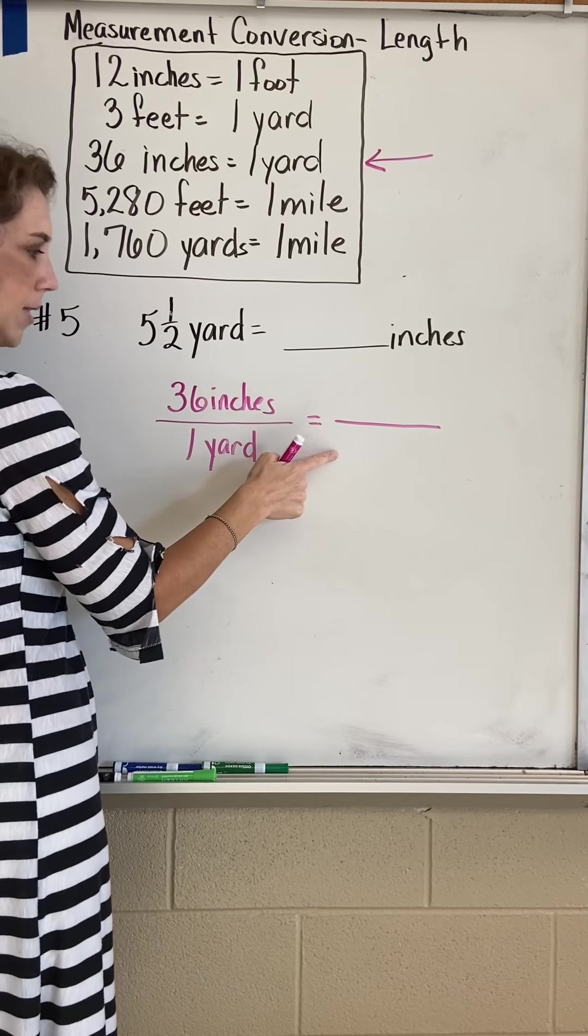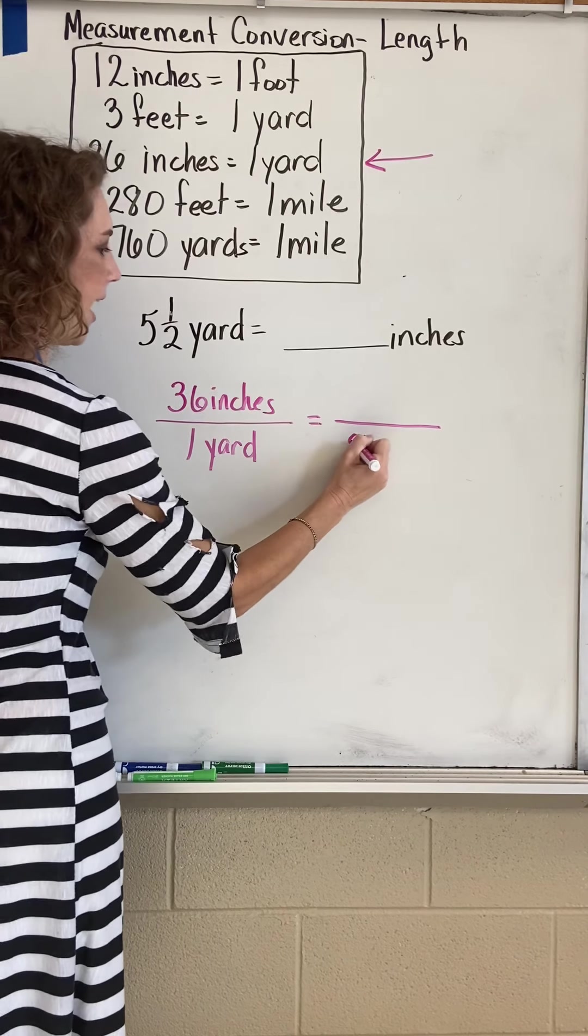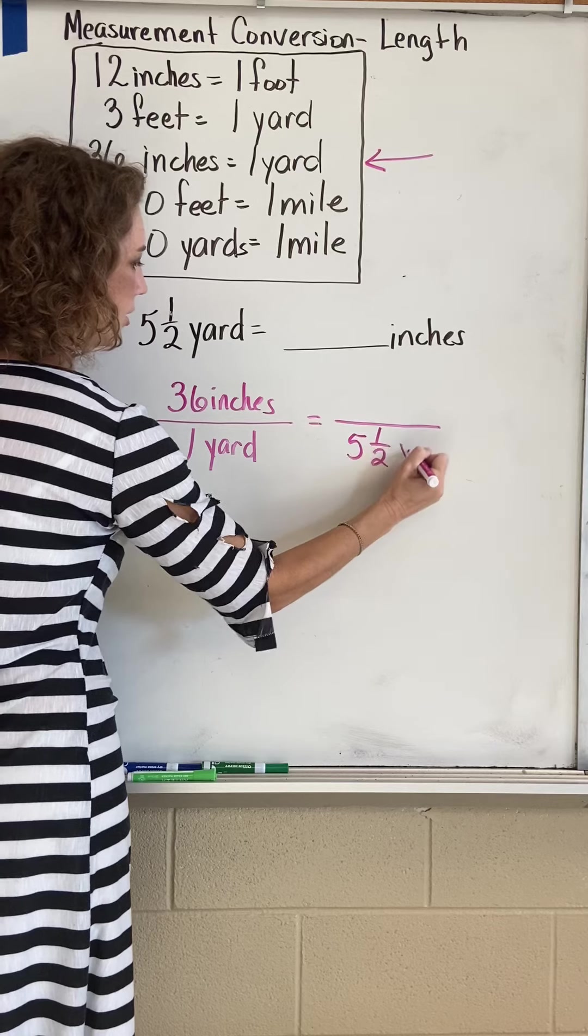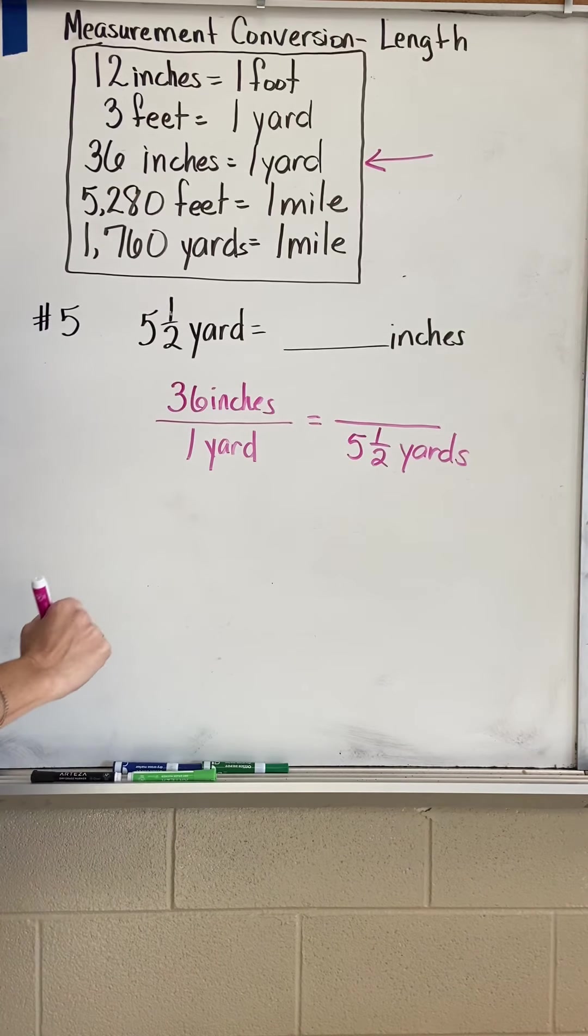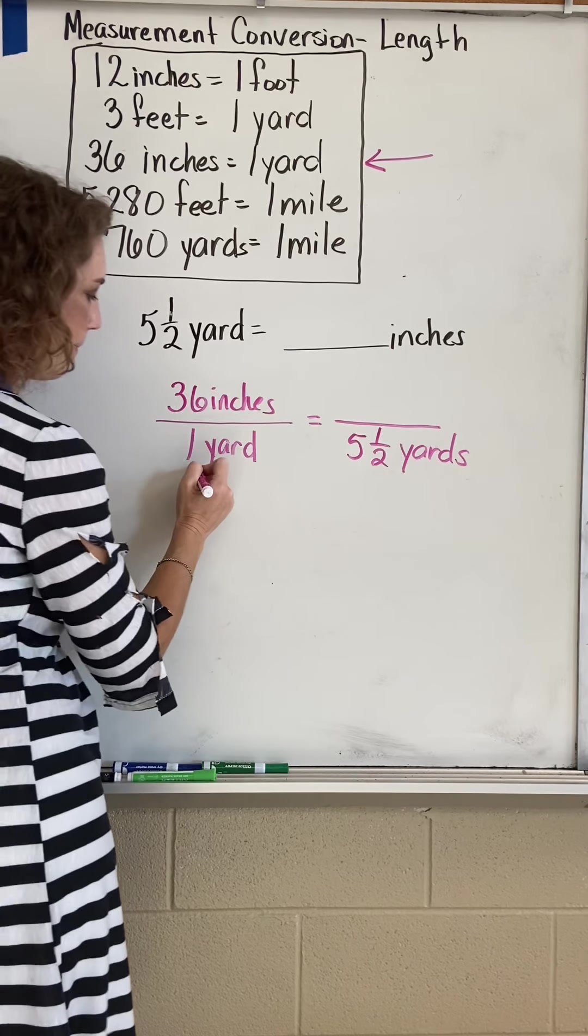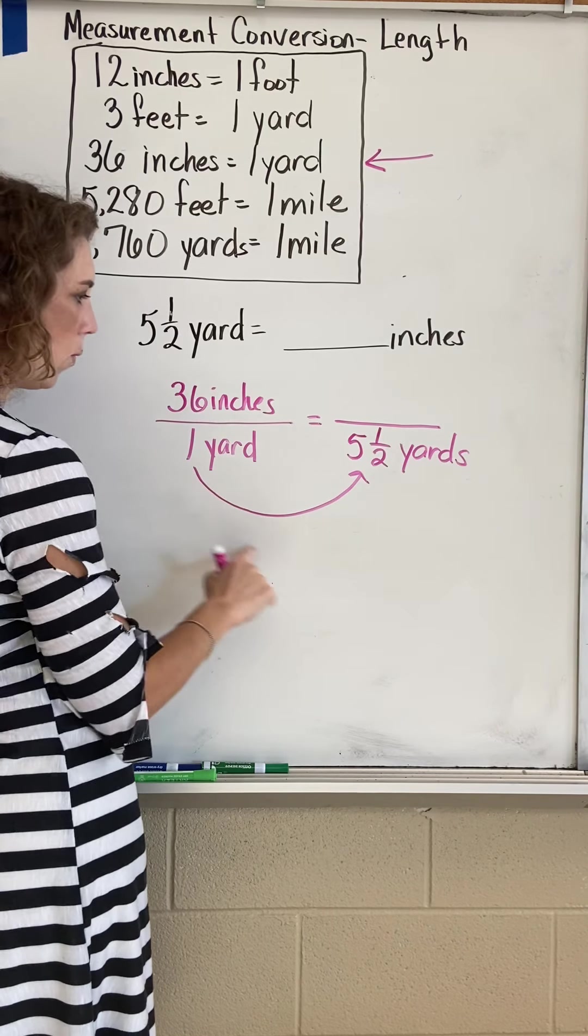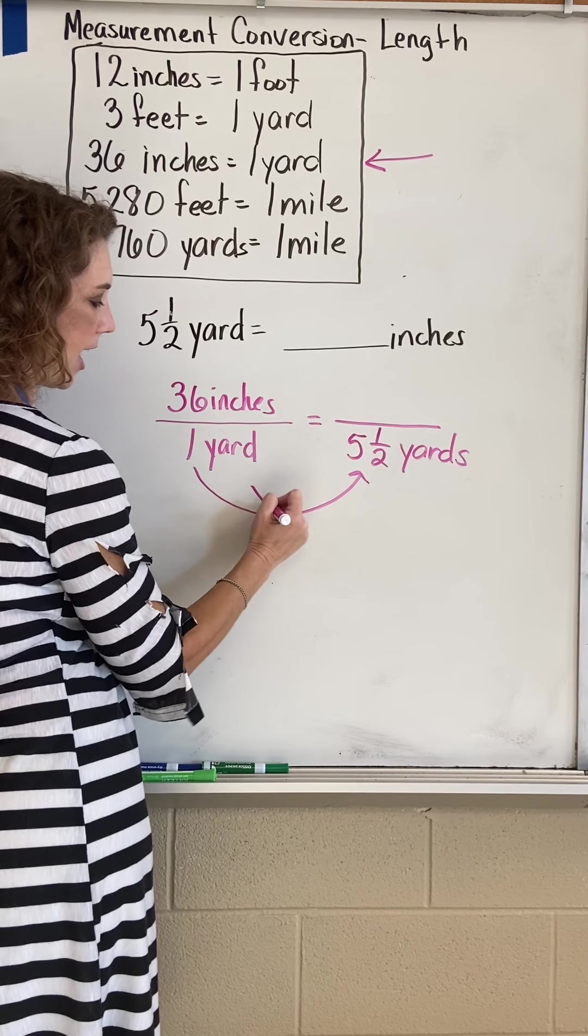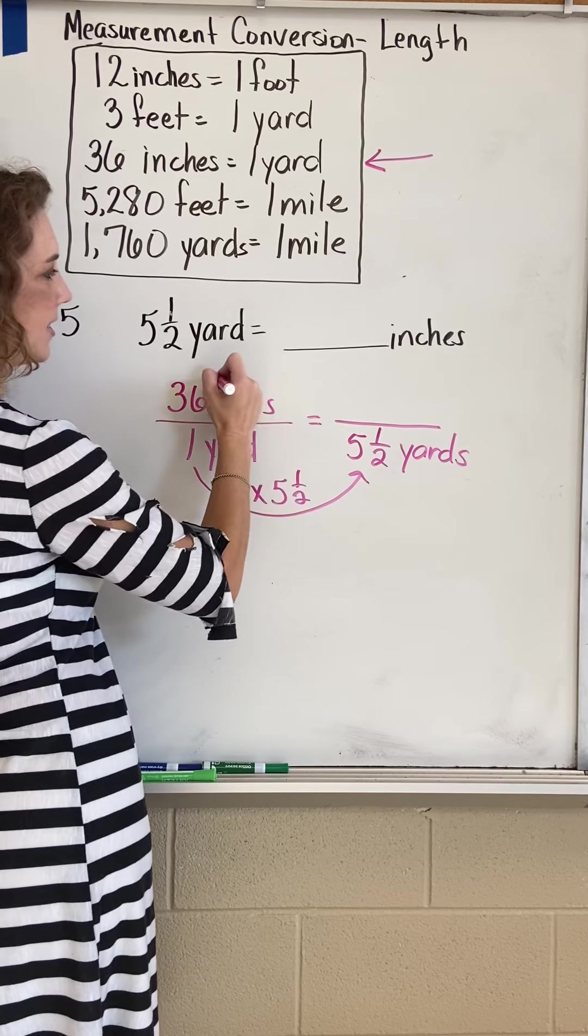Am I going to put it on the top or on the bottom? Yards is on the bottom, so we're going to put five and one-half yards on the bottom. So how do we get from one to five and a half? That would be times five and a half.